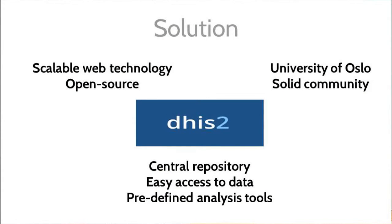Both OCP and OCBA were in the same situation a few years ago, and independently they were looking for a solution to fix these problems. Both ended up with DHIS2 — the District Health Information System — which is widely used by ministries of health in 30 countries and also by NGOs.